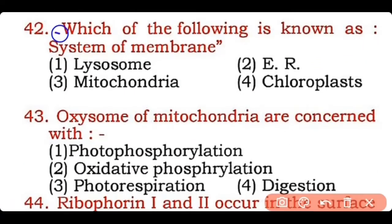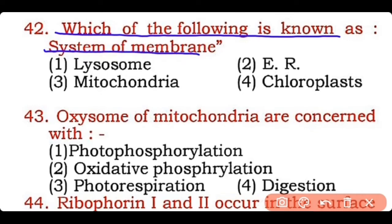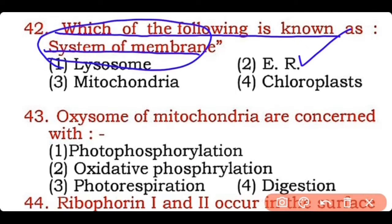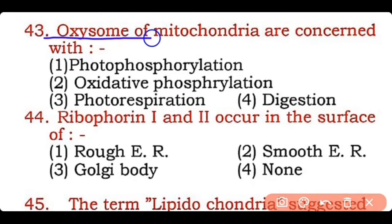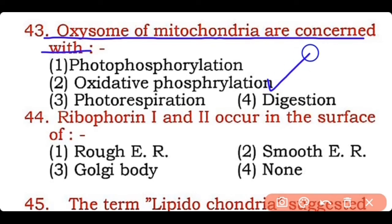Question 42: Which of the following is known as the system of membranes — lysosome, endoplasmic reticulum, mitochondria, or chloroplast? Correct answer is option two — endoplasmic reticulum is known as the system of membranes within the cell. Question 43: Oxysomes of mitochondria are concerned with — photophosphorylation, oxidative phosphorylation, photorespiration, or digestion? Correct answer is option two — oxidative phosphorylation takes place in oxysomes of mitochondria.